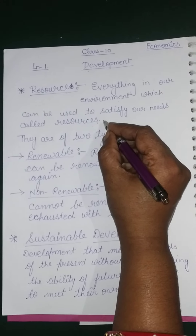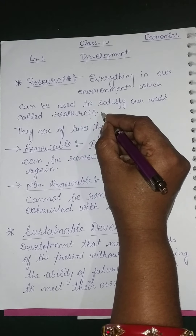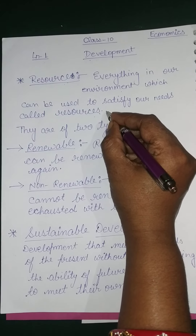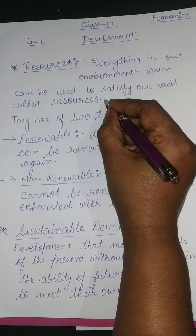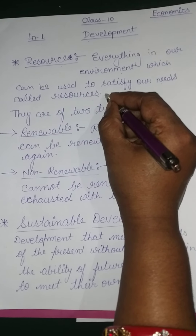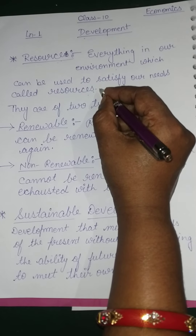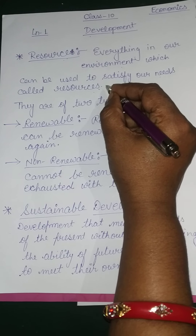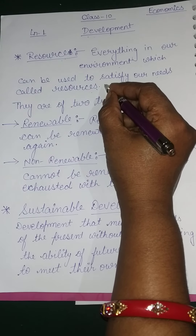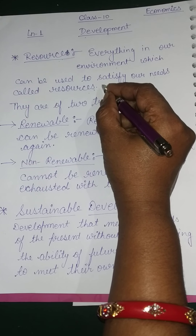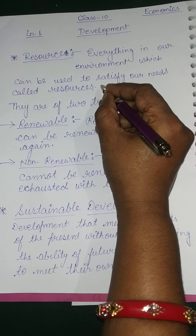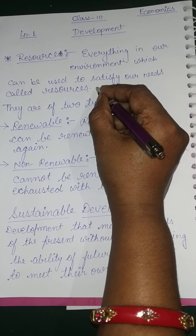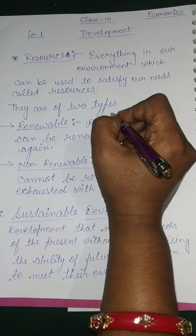From the time when human beings were able to know about the quality of coal and how it is important for them to develop their condition in society, coal transferred its category from a natural thing to a natural resource. So now you better understand that everything which provides us opportunity to develop our condition in society and is present in our environment will be called a resource. Resources are of two types.